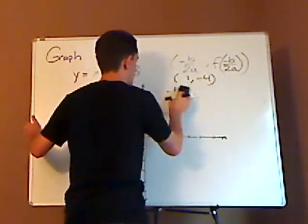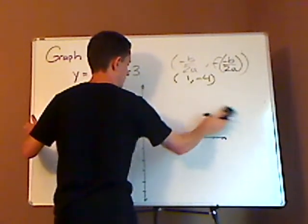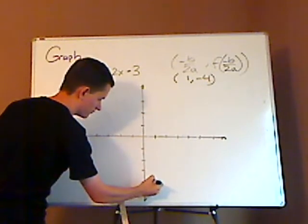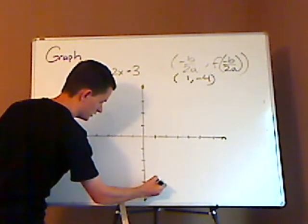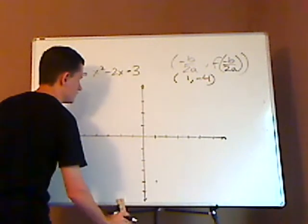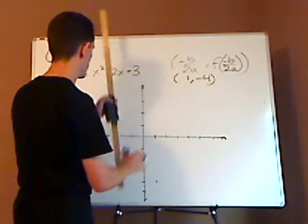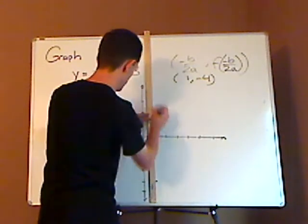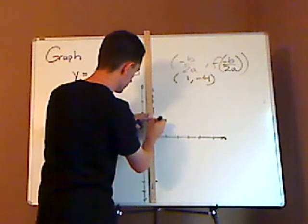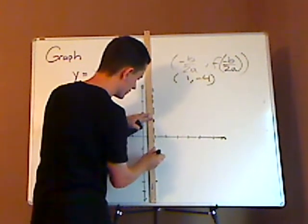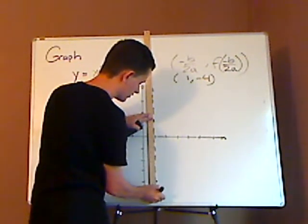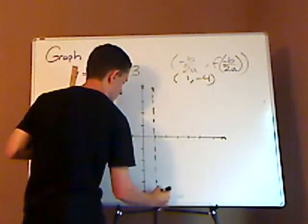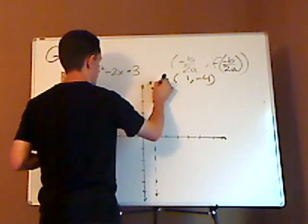Because once we have the vertex, we're almost there. So the vertex is 1, negative 4, which would be about right there. The axis of symmetry goes straight through it. I'm going to do it with a dashed line—that's kind of common practice. So that's at x equals 1.